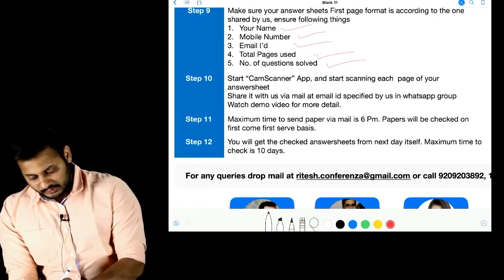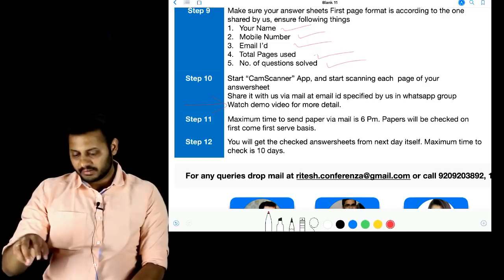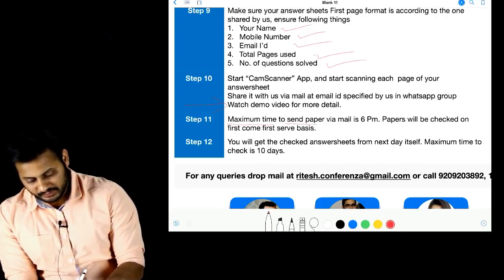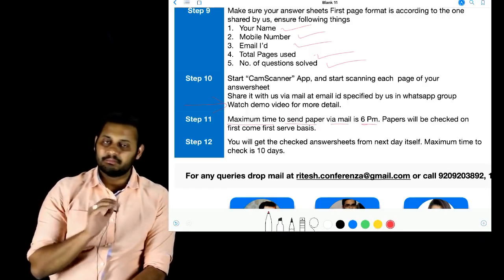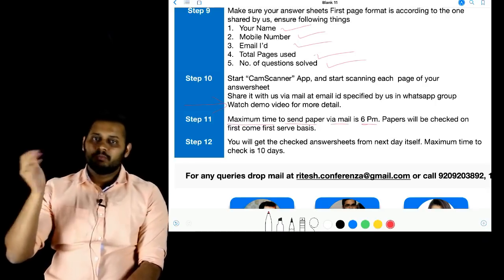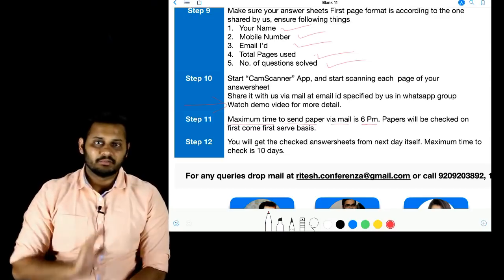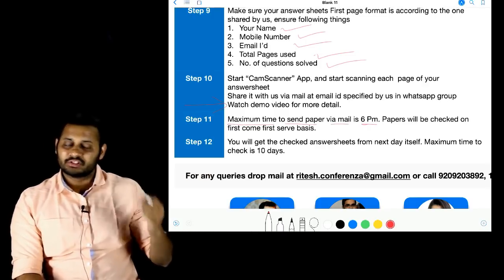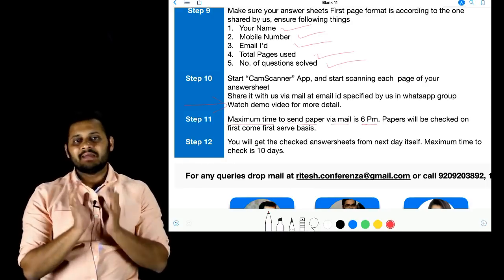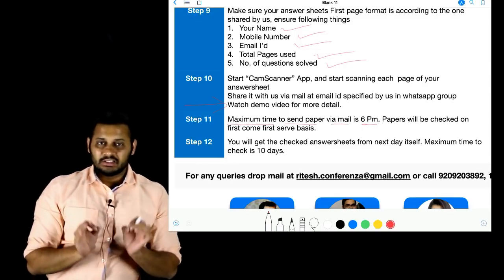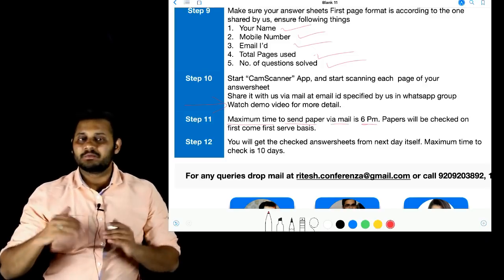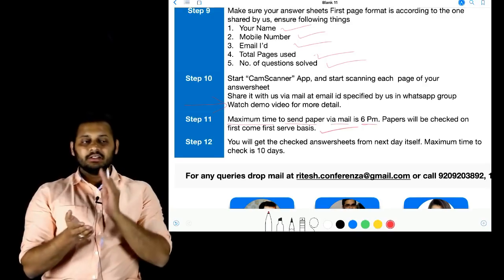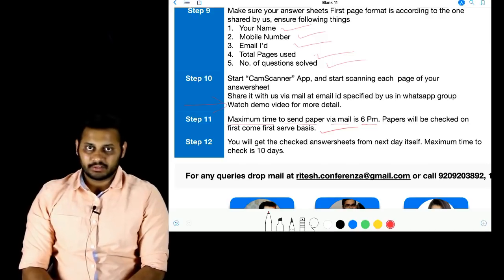A demo video has not yet been made, so for any issue you can contact via the number and email ID mentioned. The maximum time to send your paper via mail is 6:00 PM. You have one hour — from 5 to 6 PM — to scan, generate the PDF, and send it, sorting out any internet or technical issues. The most important thing to maintain is honesty: if you write after 5 PM, marks will be given but your time management will not be truly evaluated. There is no competition here — no rank, no comparison — you are doing self-evaluation. Papers received earlier will be checked first, and from the next day after the exam, checked papers will start returning to you by mail.